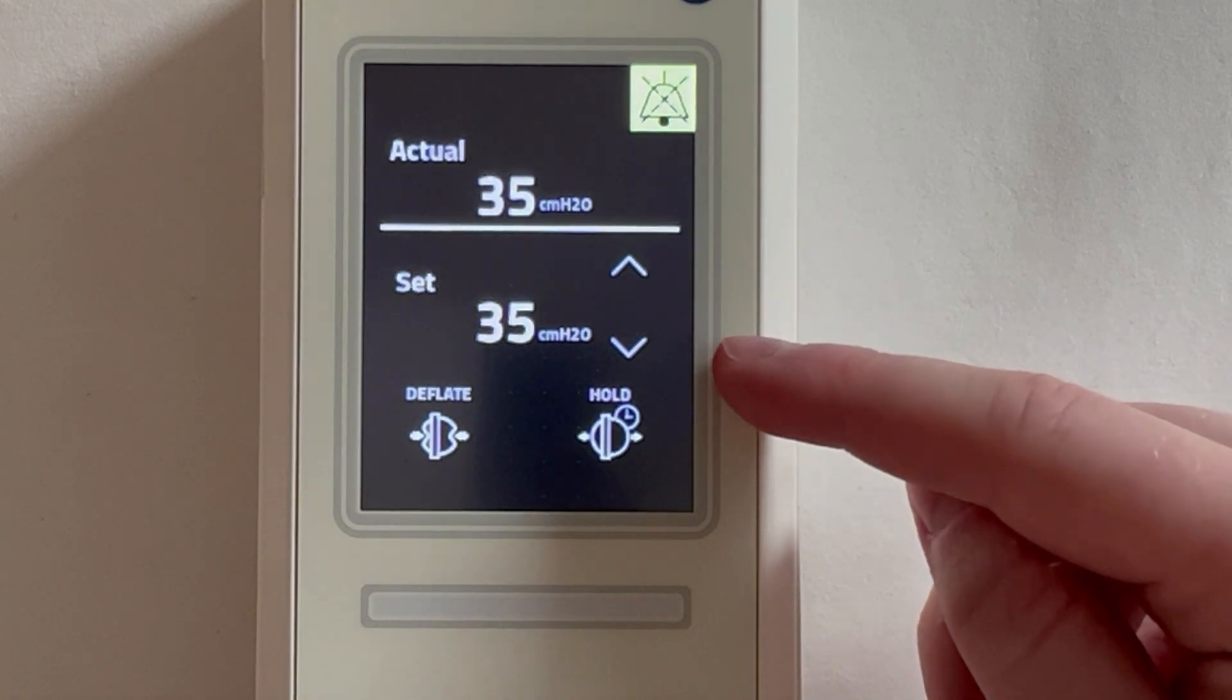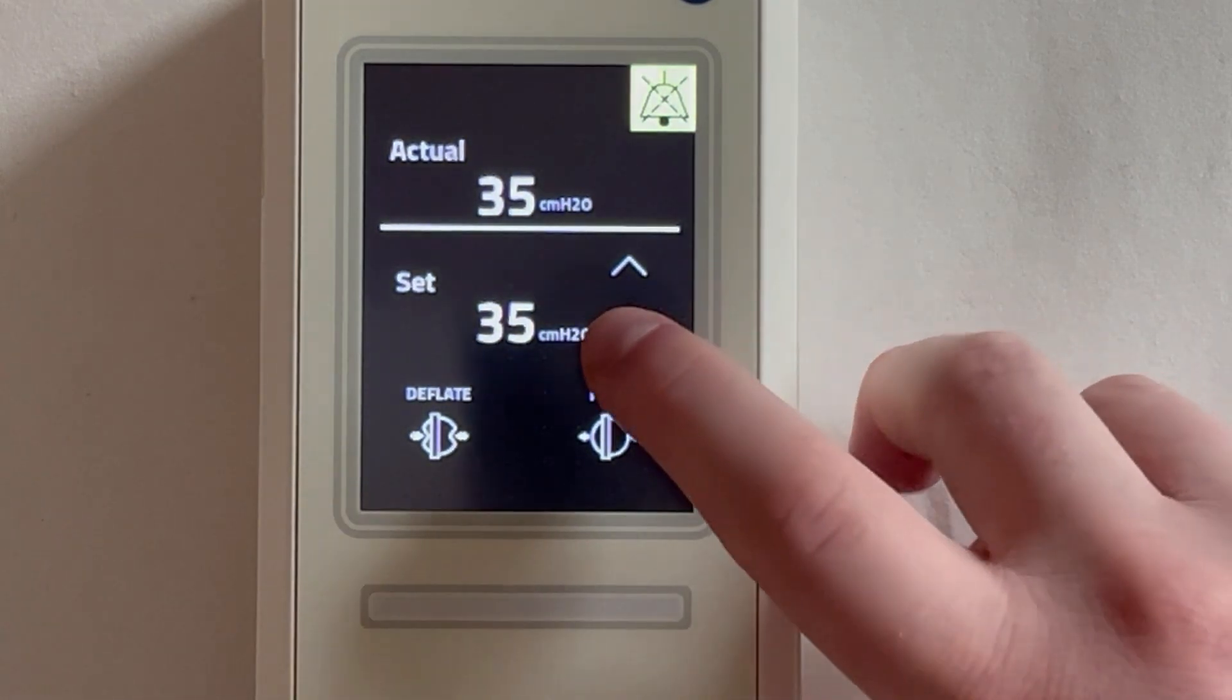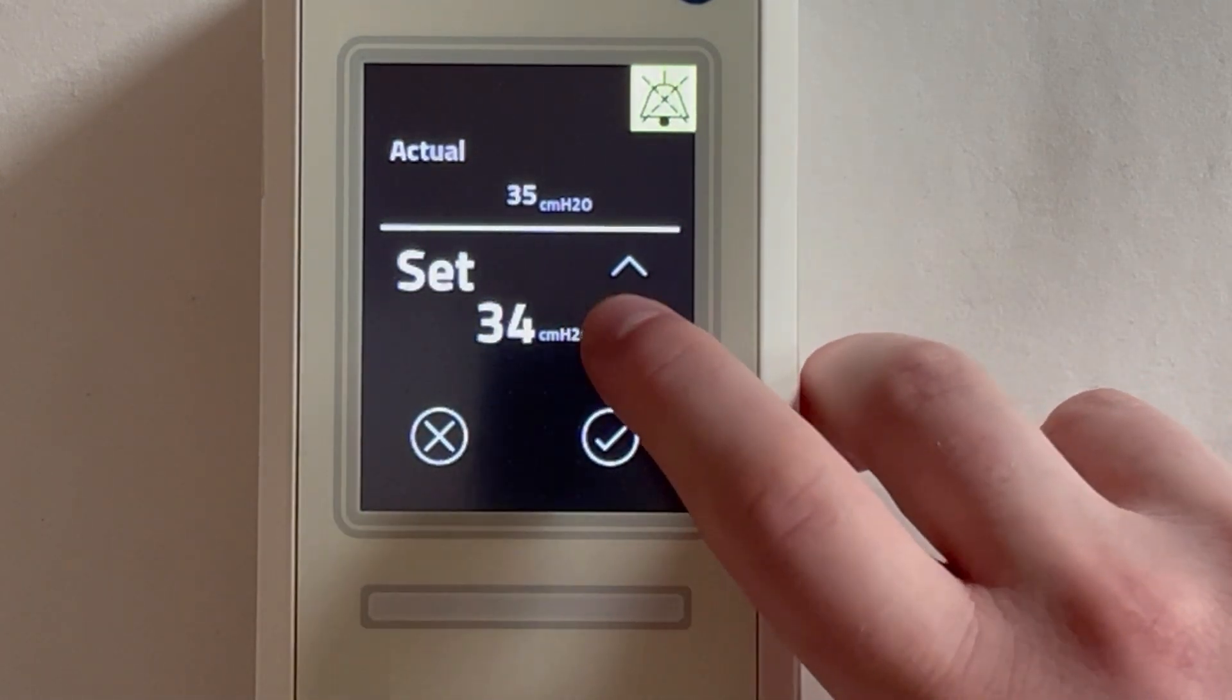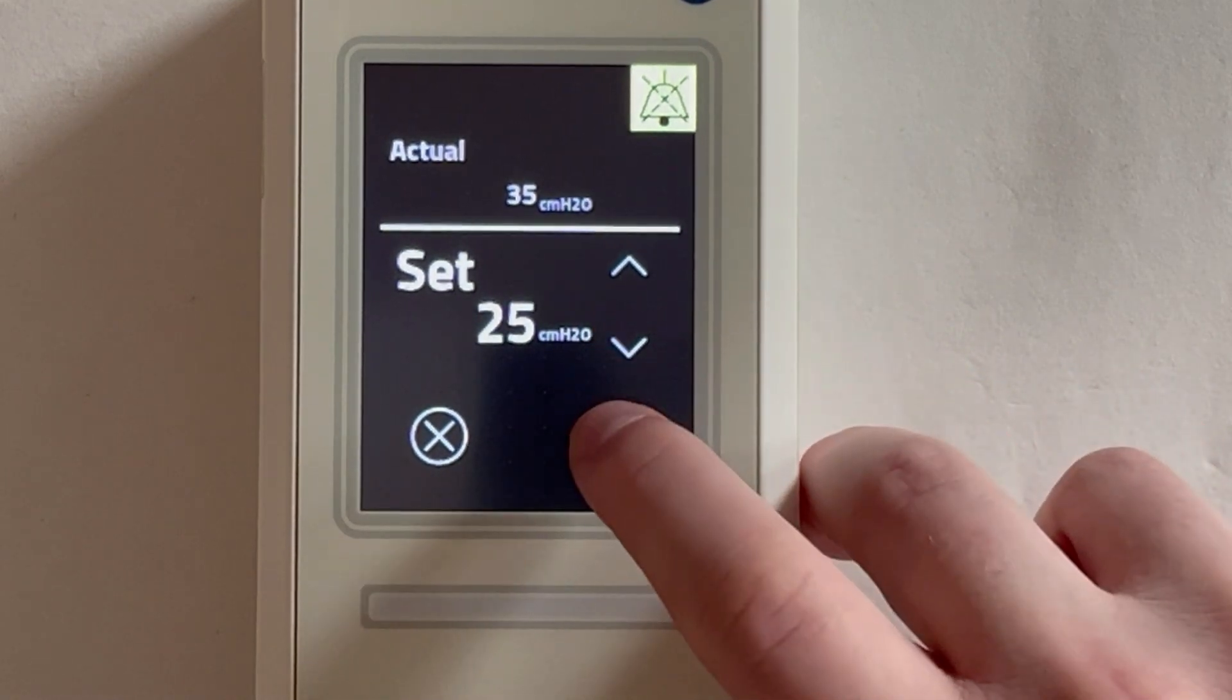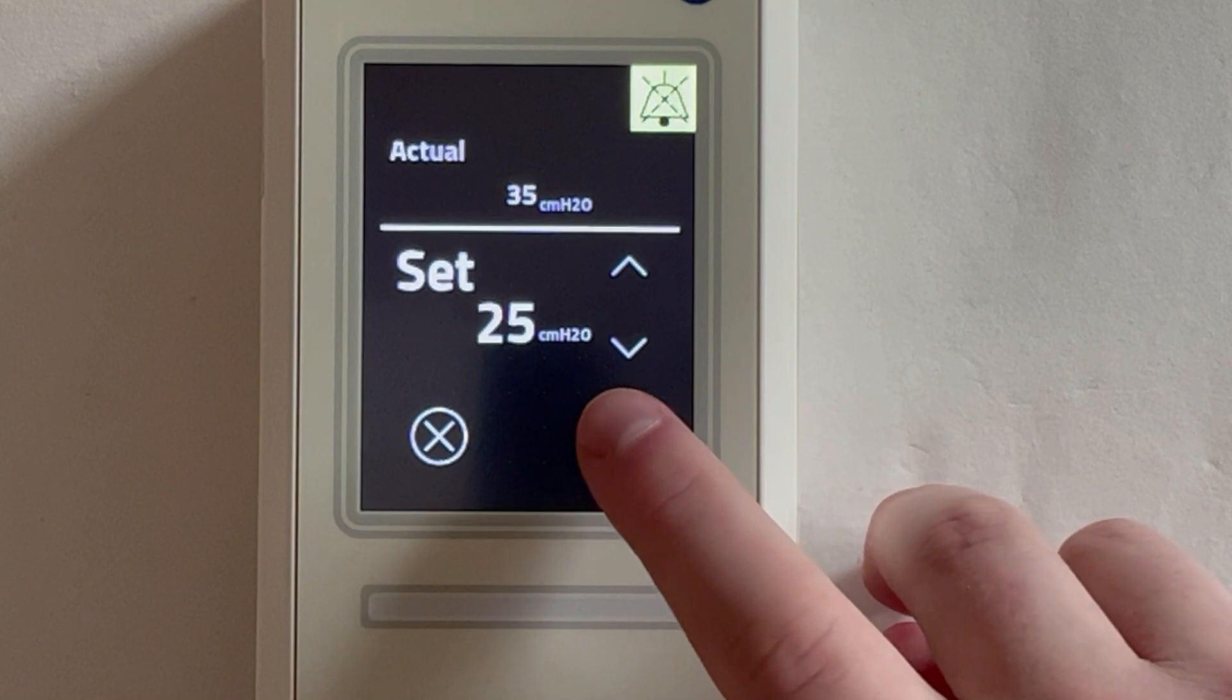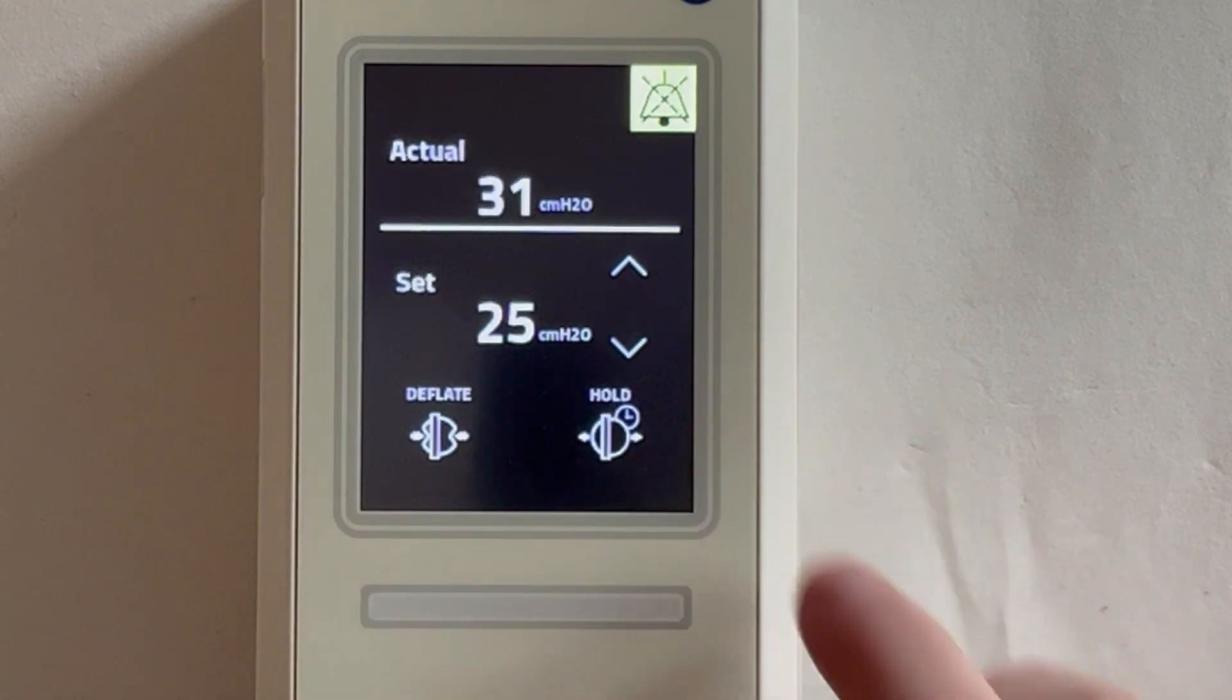To decrease the cuff pressure, press the arrow down until the desired cuff pressure is reached. Once the desired cuff pressure is reached, press the accept button. The device will now decrease the cuff pressure.